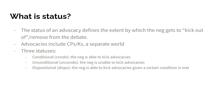The first one is conditional — the counterplan or K is conditional, also known as condo. It's where the negative is able to kick out of advocacies. The second is unconditional, or un-condo, where the negative is unable to kick out of an advocacy. And the third, weirdest one is dispositional, also known as dispo, where the negative is able to kick out of advocacies given a certain condition is met — for instance, we get to kick the counterplan if you permute or something.